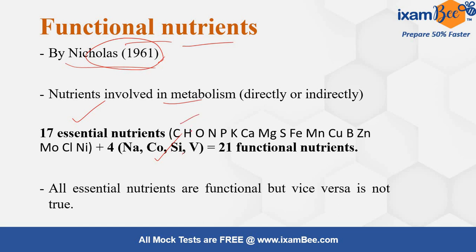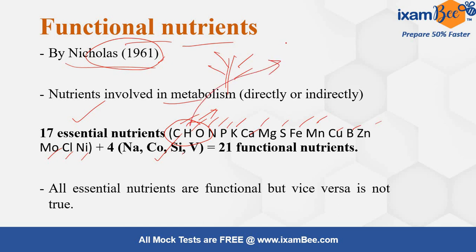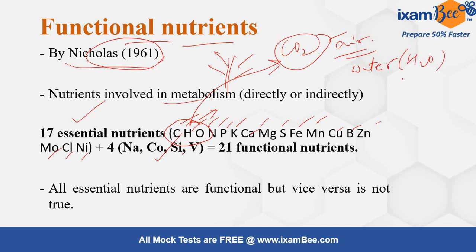The 17 essential nutrients are: Carbon, Hydrogen, Oxygen, Nitrogen, Phosphorus, Potassium, Calcium, Magnesium, Sulfur, Iron, Manganese, Copper, Boron, Zinc, Molybdenum, Chlorine, and Nickel. Among them, Carbon, Hydrogen, and Oxygen are the structural ones, responsible for proper structure of plants. Carbon is mainly obtained from the atmosphere as CO₂, and Hydrogen and Oxygen are obtained from water. These three are the only non-mineral elements; the rest are mineral elements.